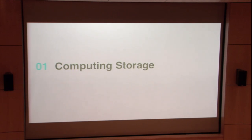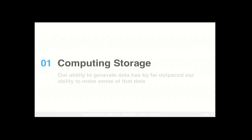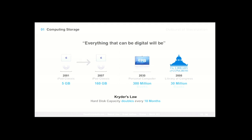The first reason ties back to computing storage. Our ability to generate data has by far surpassed our ability to make sense of that data. A great example to understand this is Kryder's Law, which is very similar to Moore's Law. It says that storage capacity doubles every 18 months. Kryder's Law has been correct in most cases, although it has been slowing down over the past two years.